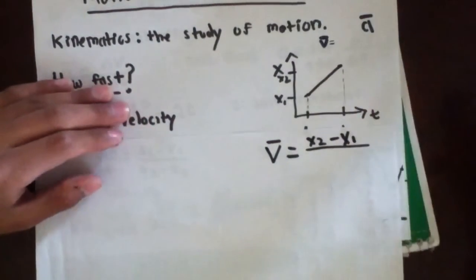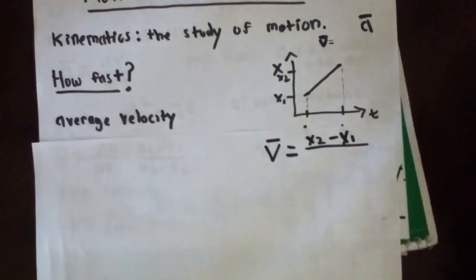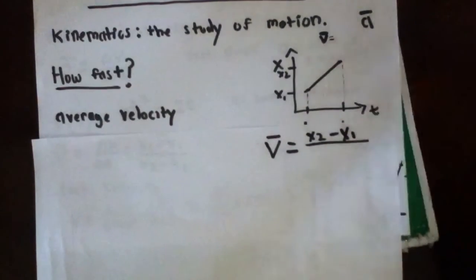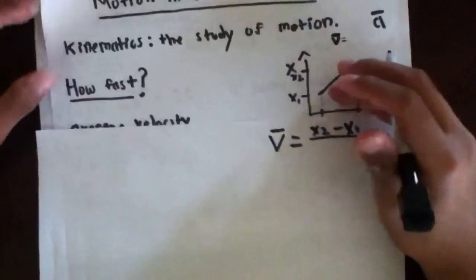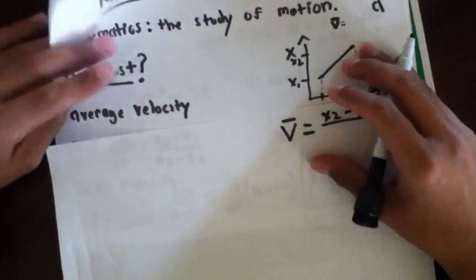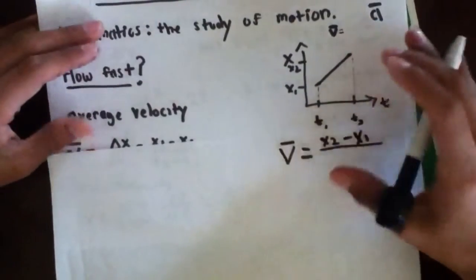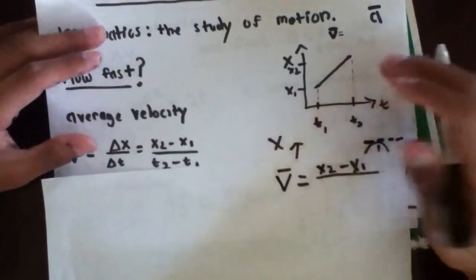Notice how I said the final minus the initial. Whenever we mean change, that's how we denote it. The final quantity minus the initial quantity. So, we're already halfway done with representing this average velocity from t1 to t2. Now, we're just interested in the change in time.